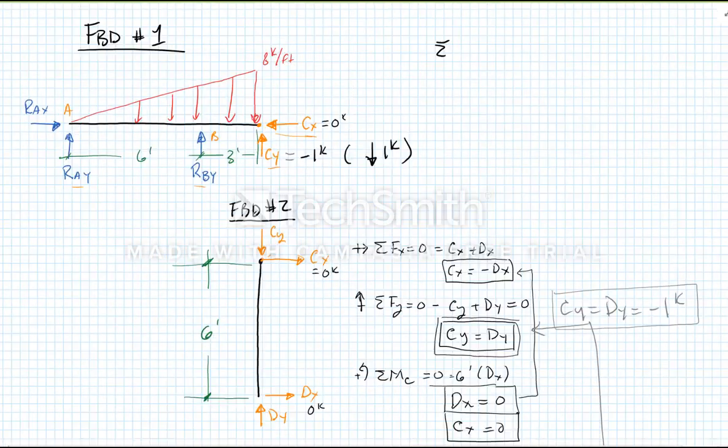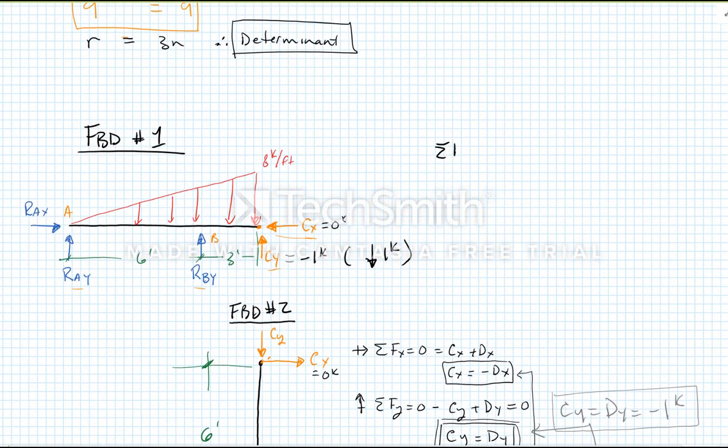Zoom out a little bit here. Sum of the forces in the x direction equals zero, to the right being positive, equals RAX minus CX. We can see CX is equal to zero. So we can conclude right here that RAX is equal to zero. Makes sense. No horizontal loads applied, so no horizontal reaction.